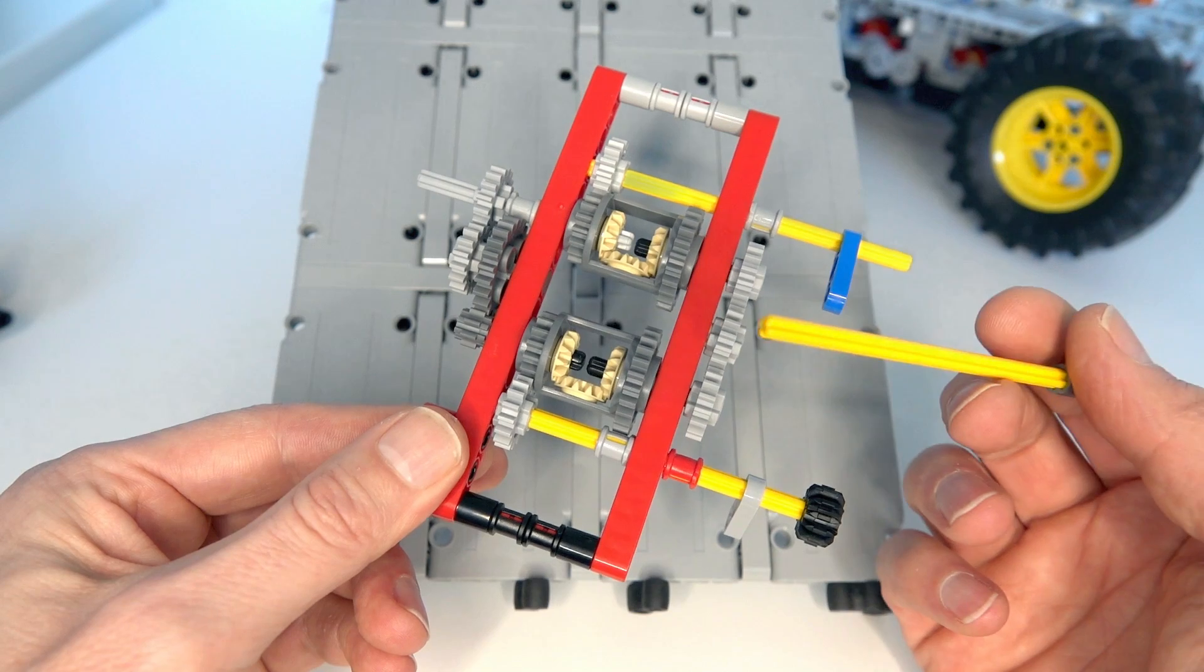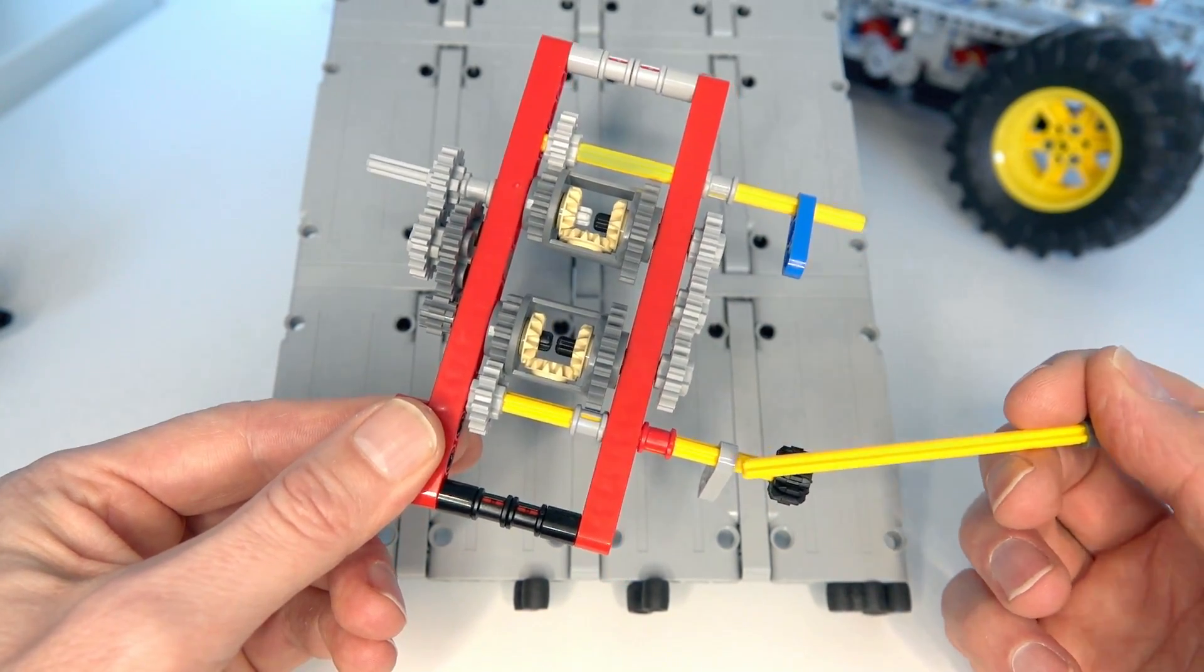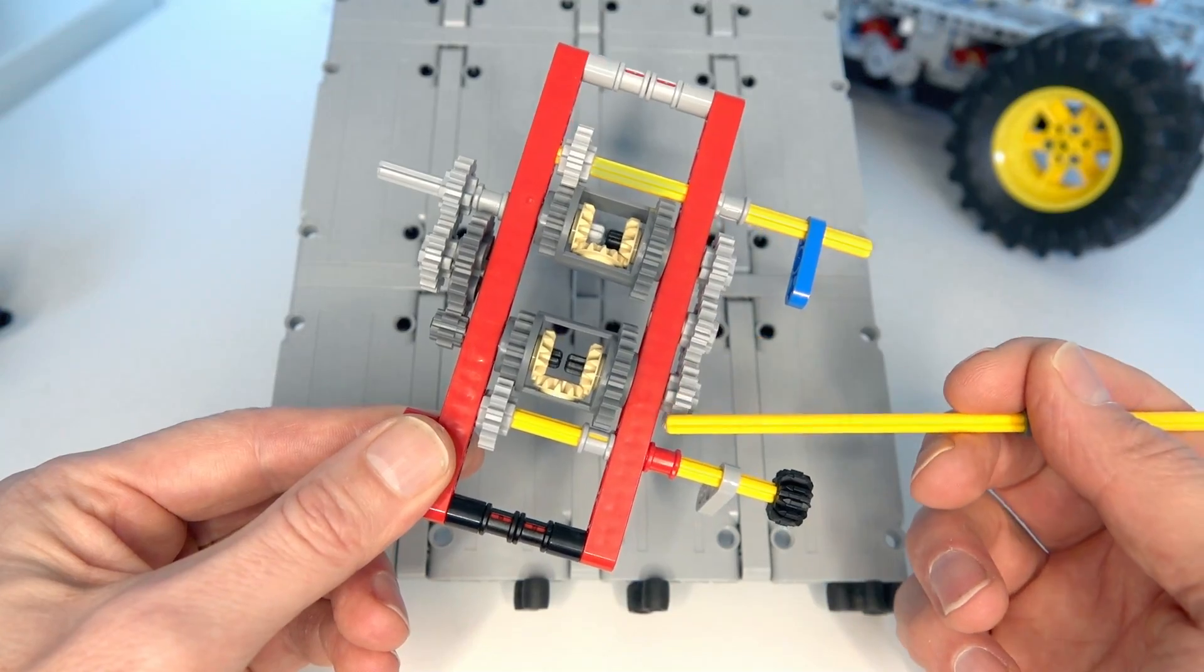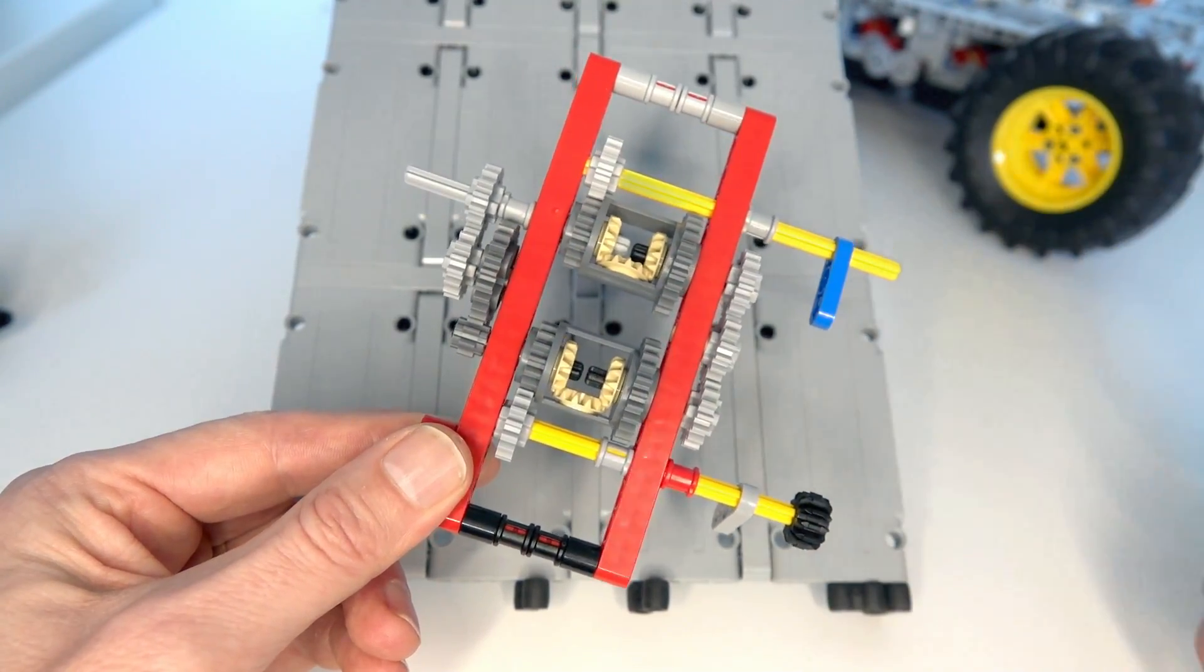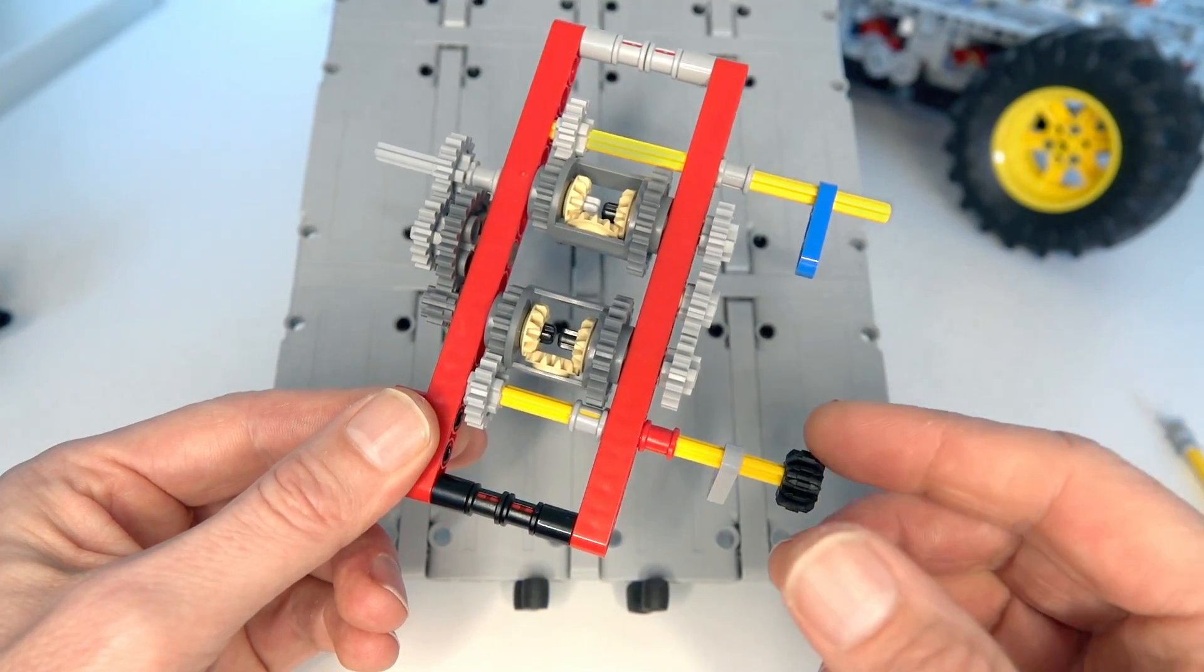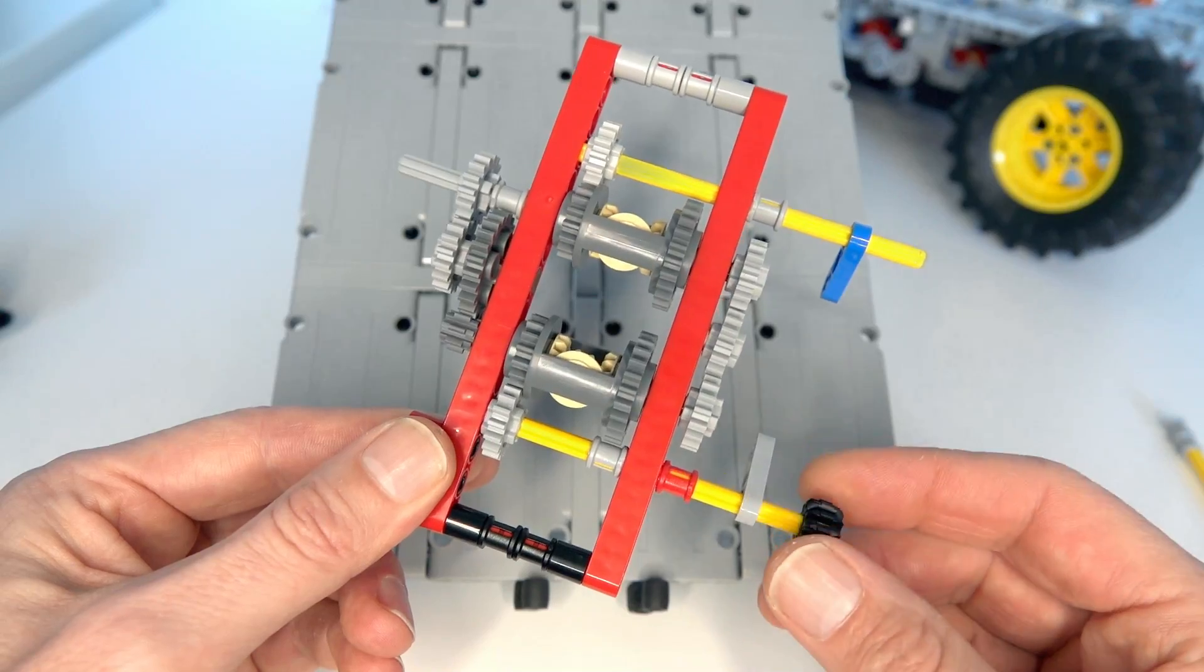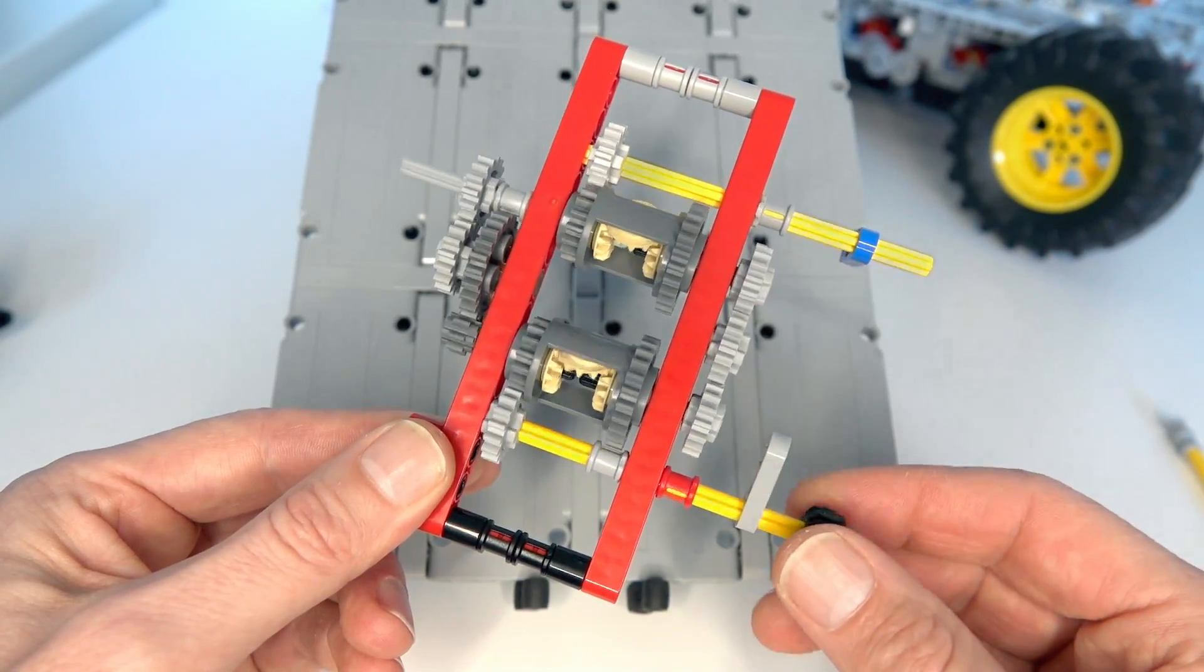And the way that worked is that this particular configuration allows two different paths between the input and the output. So we've got this path on the right there which is a 1 to 1 gearing ratio and the path on the left which is a 1 to 3. And if we just turn the input you can see that both paths are being used and the output gearing ratio is somewhere in between that 1 to 1 and 1 to 3.